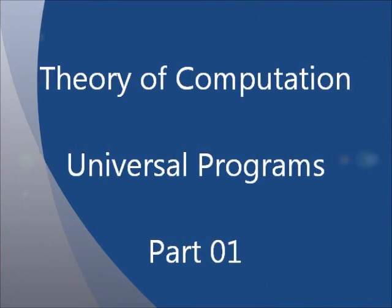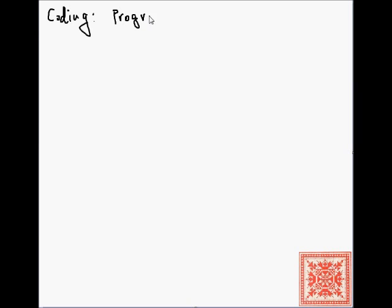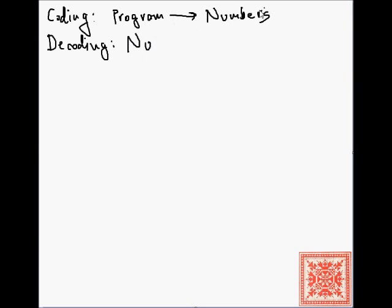In this screencast we'll start talking about universality or universal programs. Let's refresh our memory and briefly review the concepts of coding and decoding. In coding, we map programs to numbers — each program being mapped to a unique natural number. In decoding, we go from numbers back to programs. Coding is similar to compilation, and decoding can be compared to reverse compilation: take a number and extract the source code.